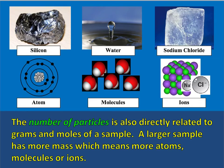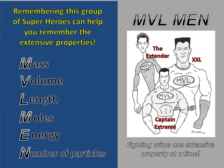You can see some examples up here on the screen. The science teachers in the district came up with a little acronym to help you remember the extensive properties: MVL Men. M stands for mass, V for volume, L for length, M for moles, E for energy, and N for number of particles. Go ahead and write down what this acronym states in that gray box. There's also a question: what type of properties do the MVL Men represent? They represent extensive properties, all of which relate to size and amount.